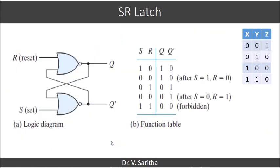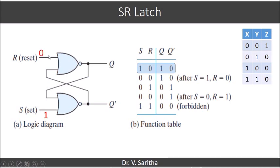For example, we will look at the SR latch — the basic one — implemented using NOR gates. Considering the function table: when S is 1 and R is 0, substituting these values, the property of the NOR gate states that if any one input is 1, the output is 0. So with S=1 and R=0, because S is 1, irrespective of the second input, Q-bar becomes 0.